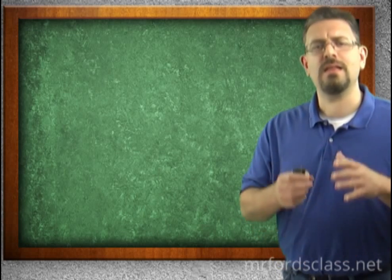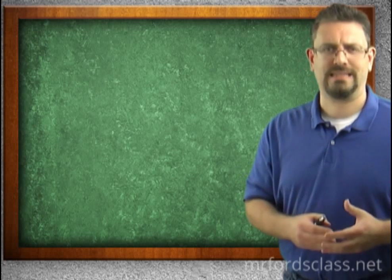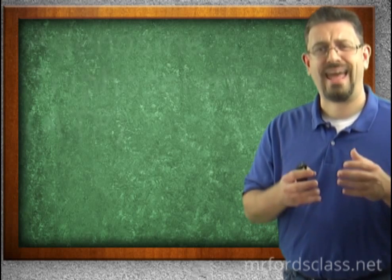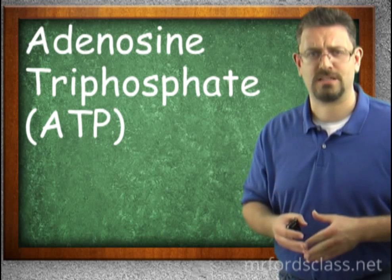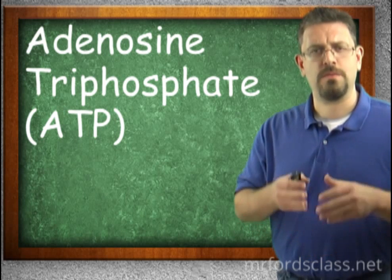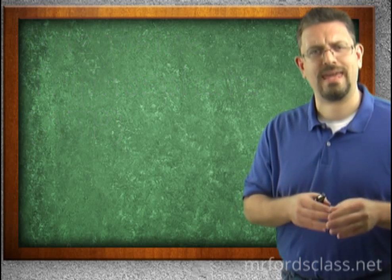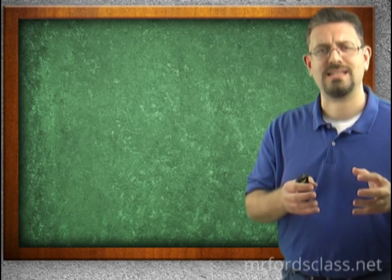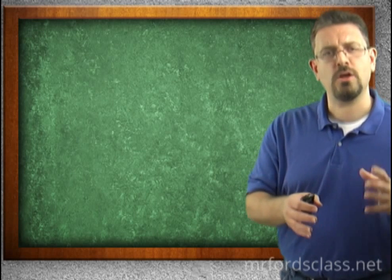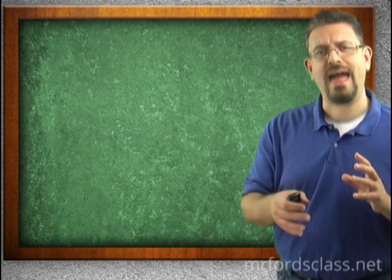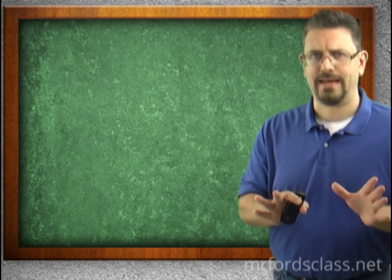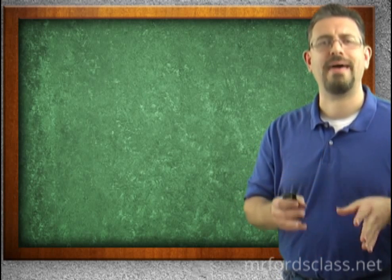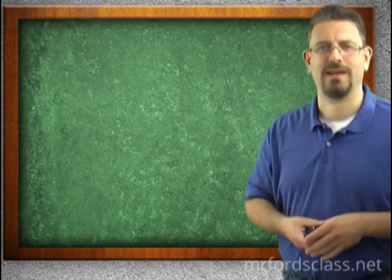Quick summary: the energy that the body uses to function is called ATP, adenosine triphosphate. The energy itself is located at that last phosphate — you pop off that phosphate, you have a release of power; you attach that phosphate, and you're storing power. In our next video, we're going to take a look at some of the fundamentals behind respiration.